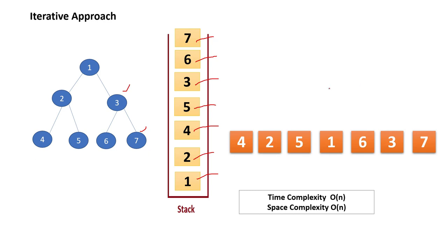Now talking about the time complexity: as we are visiting each and every node, if we have total N nodes then the time complexity will be O(N). Space complexity wise, as we are taking one stack which can hold N values, the space complexity will be O(N). This is for both cases — for the recursive approach also, time complexity is O(N), and the internal call stack will maintain space, so space complexity is O(N) as well.